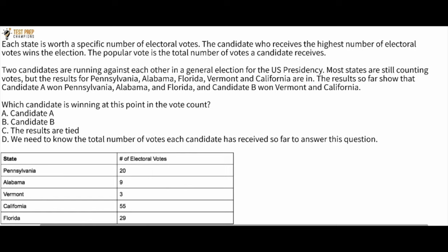The results so far show that candidate A won Pennsylvania, Alabama, and Florida, and candidate B won Vermont and California. Which candidate is winning at this point in the vote count? Is it candidate A, candidate B, are the results tied, or do we need to know the total number of votes each candidate has received? A table shows how many electoral votes each state is worth: Pennsylvania is 20, Alabama is 9, Vermont is 3, California is 55, and Florida is 29.